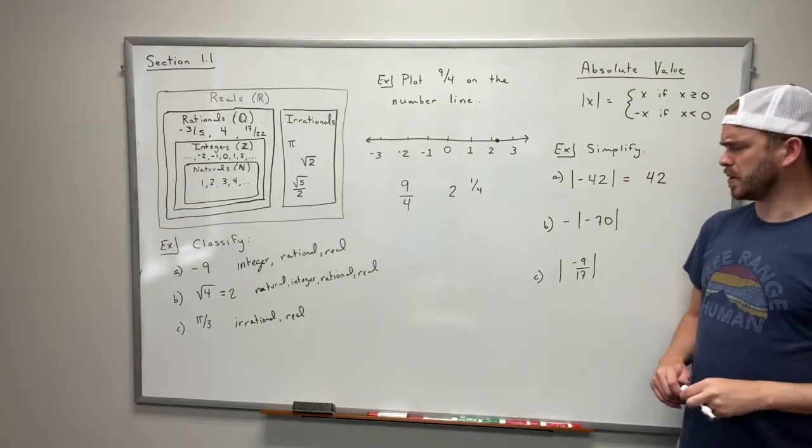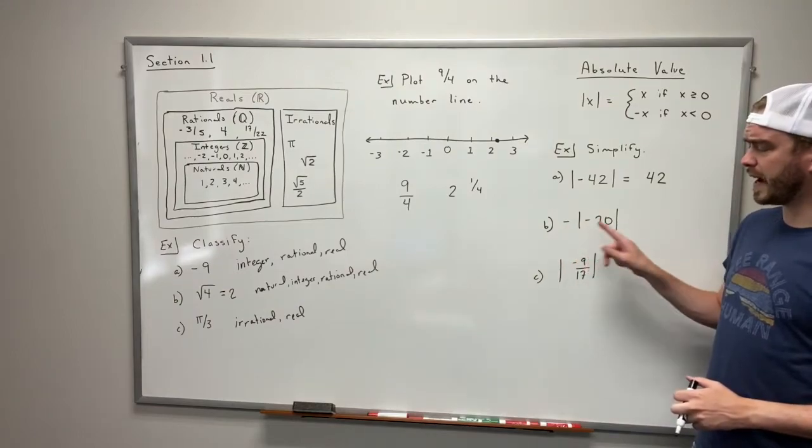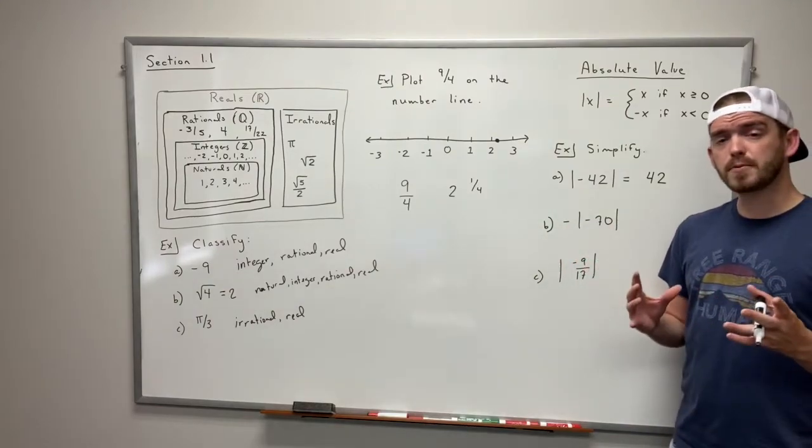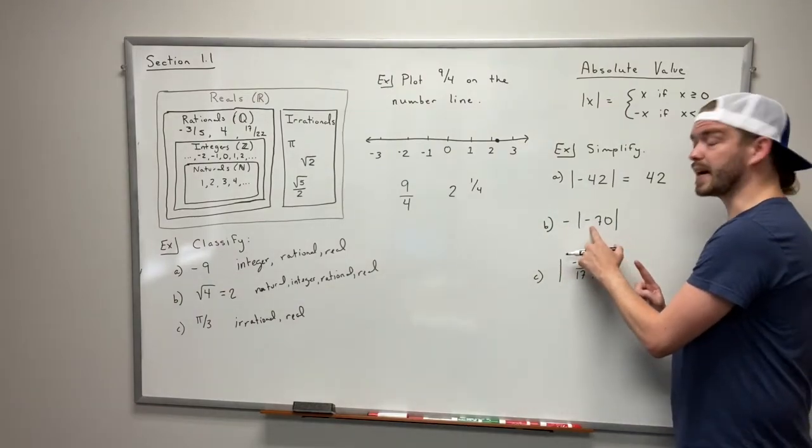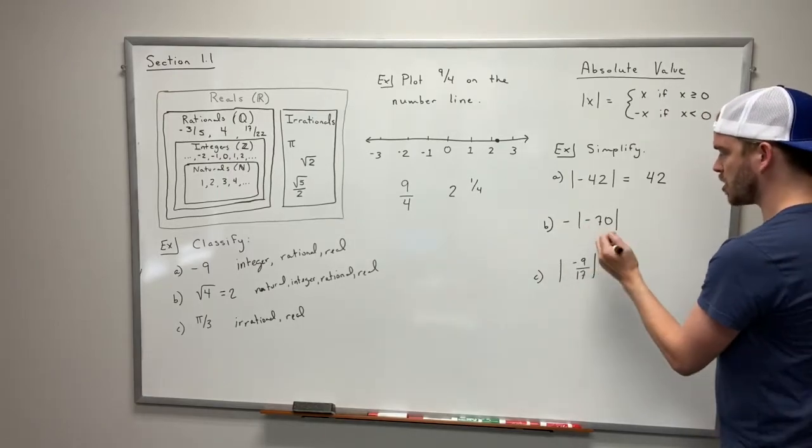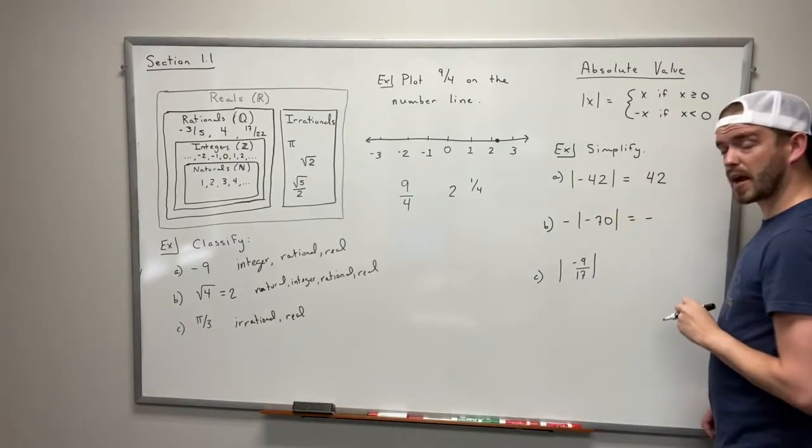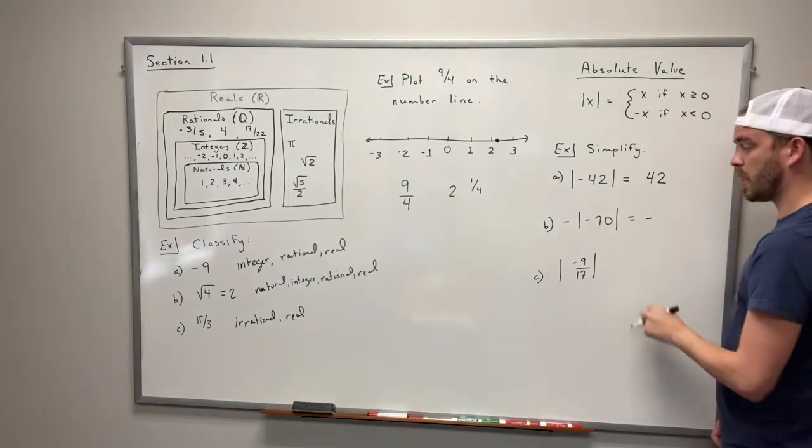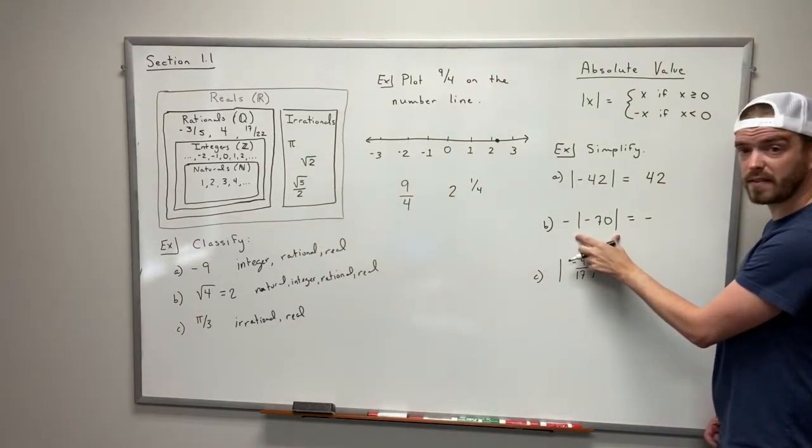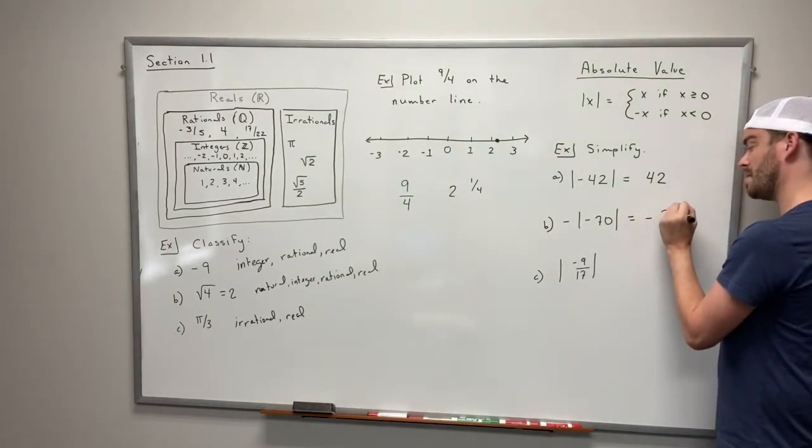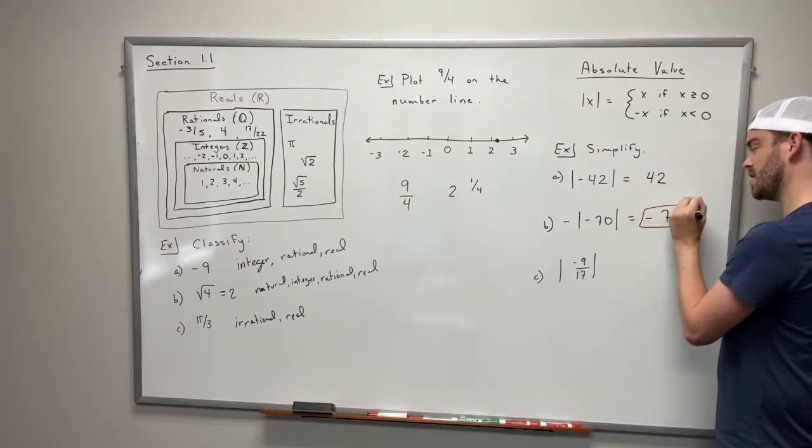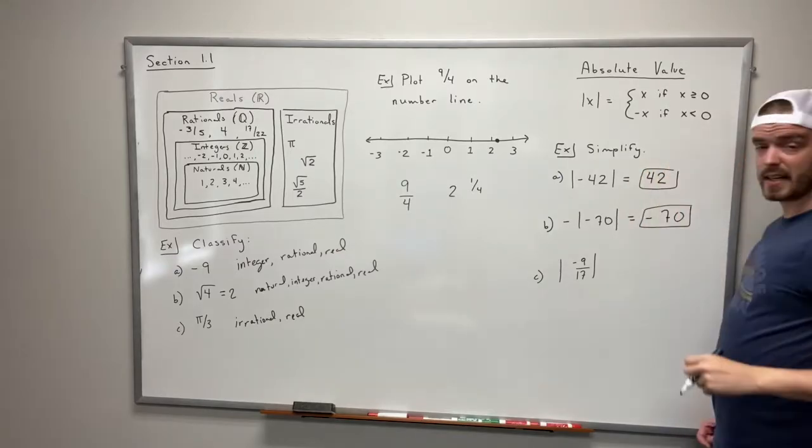B's got a little bit of extra work to it though. We have a negative on the outside and a negative on the inside. The absolute value only affects the negative that's on the inside. So this negative on the outside is just going to hang around and then we're going to work this problem out. So the absolute value of negative 70 is positive 70 but our final answer is negative 70.